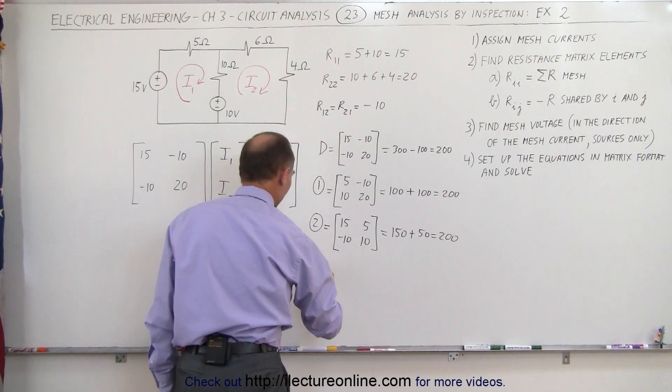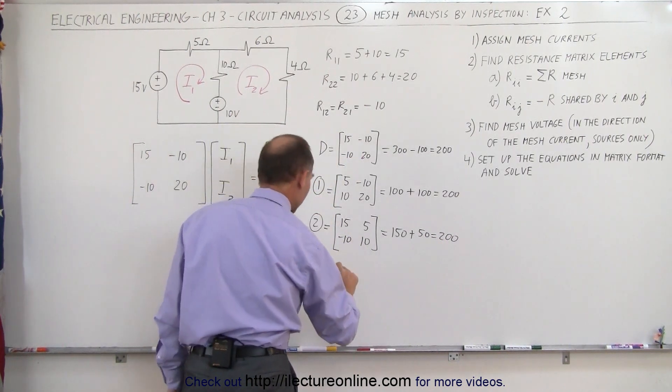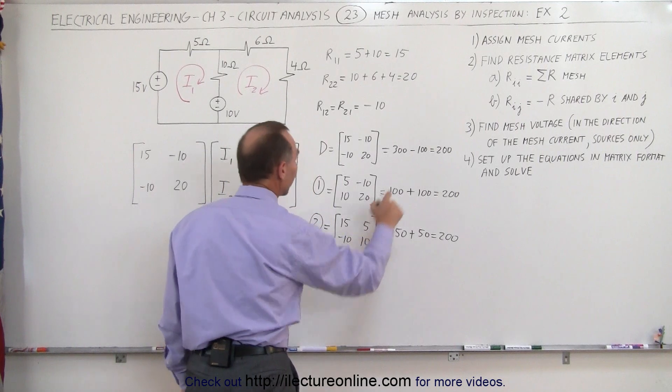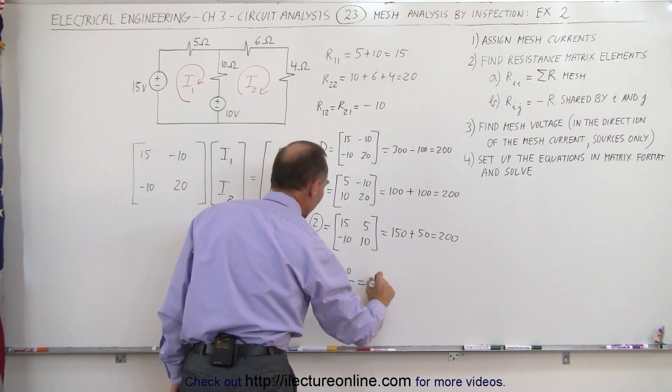Which means that I1 can be found by taking the result of the first matrix, which is 200, and divided by the determinant matrix, which is 200, which is equal to 1 amp.